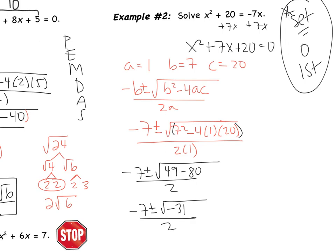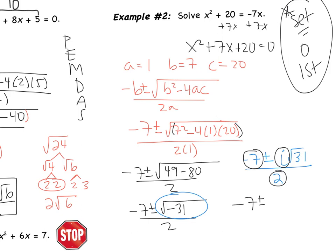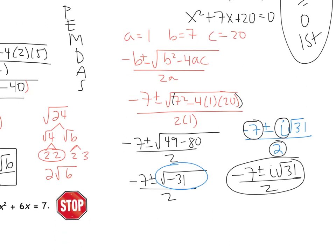Before I start dividing, I need to simplify the square root of negative 31. There are no factors I can take out, but there is an i since it's negative. So this becomes i root 31 — we don't like a negative under the root. Looking at negative 7, the i, and the 2: the largest common factor is 1, so I can't simplify further. My answer is negative 7 plus or minus i root 31, all over 2. This gives two answers: negative 7 plus i root 31 over 2, and negative 7 minus i root 31 over 2.